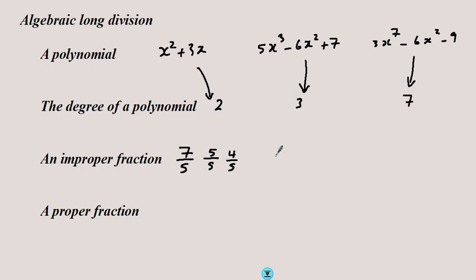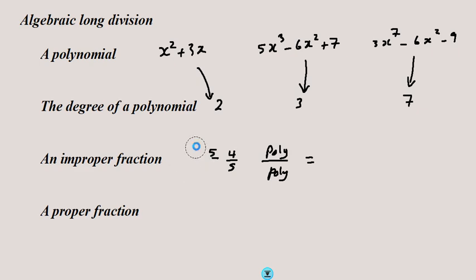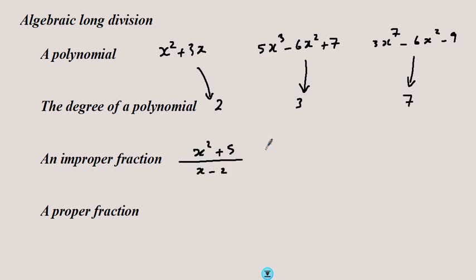In the world of algebra, if we have a polynomial over a polynomial, then an improper fraction is when the polynomial in the numerator has a degree that is greater than or equal to the degree of the polynomial in the denominator. For example, x squared plus 5 divided by x minus 2 is second degree divided by first degree, so it's improper because the power of x in the numerator is greater than the highest power of x in the denominator.